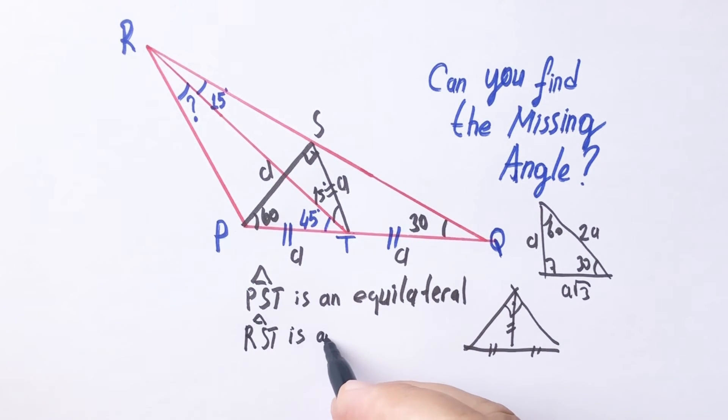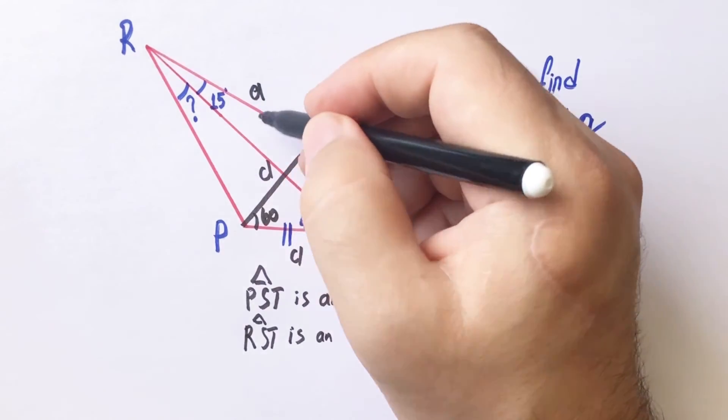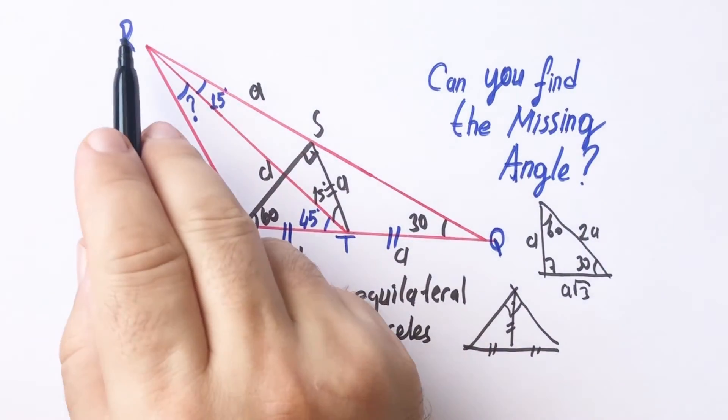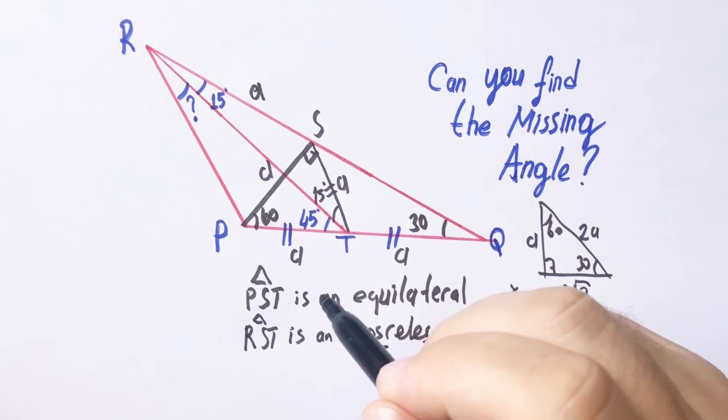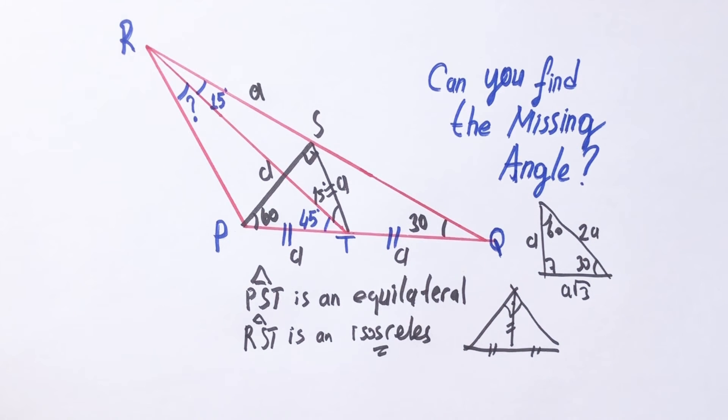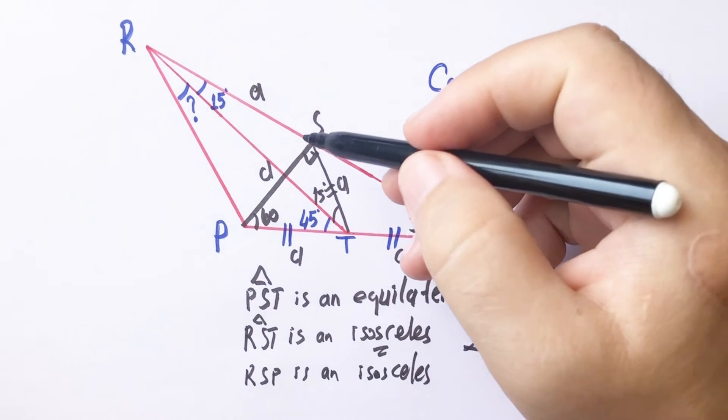The base angles are equal to the base angles and right here will be 60 degrees.